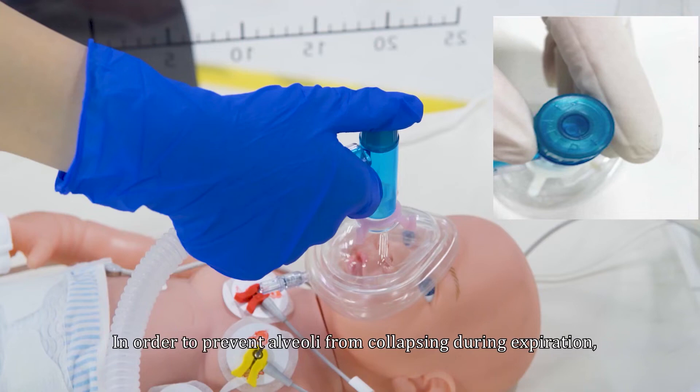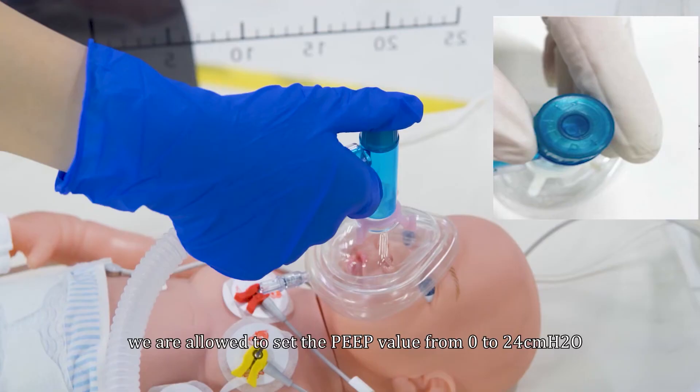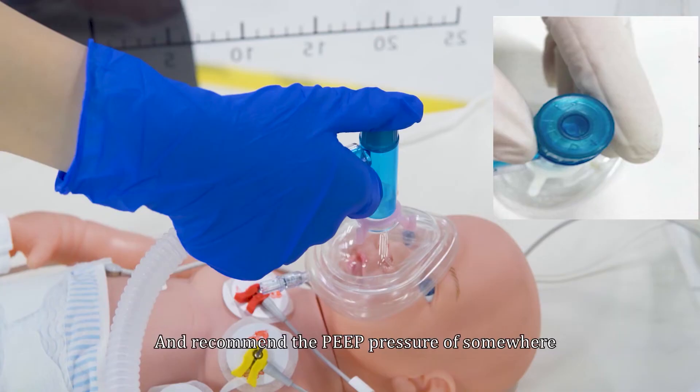In order to prevent alveoli from collapsing during expiration, we are allowed to set the PEEP value from 0 to 24 centimeters of water by altering the pop-off valve after obstructing the far end. Recommend the PEEP pressure of somewhere just above 5 centimeters of water and below 8 centimeters of water.